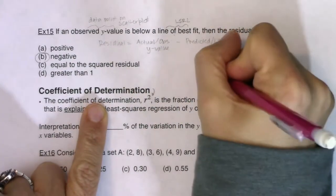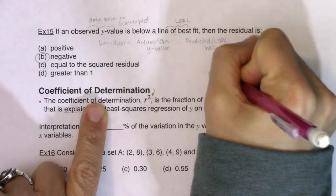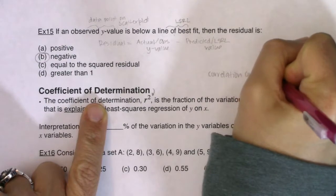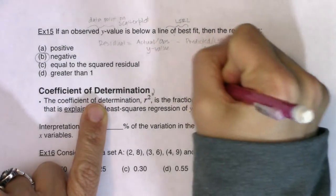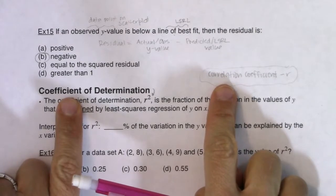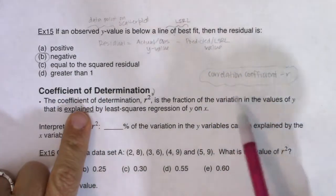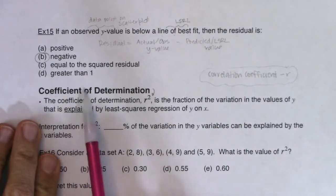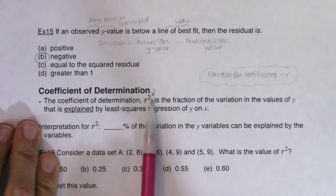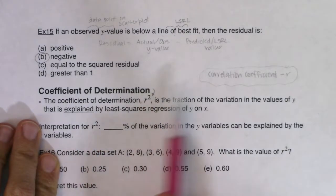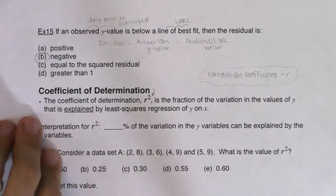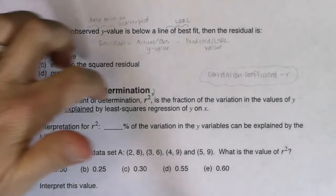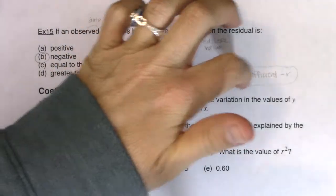The coefficient of determination is r squared, and the correlation coefficient is just r. They both have the word 'correlation' in them but they're different. A mnemonic: the one with three words has the higher exponent (r squared), and the one with two words has a power of one.